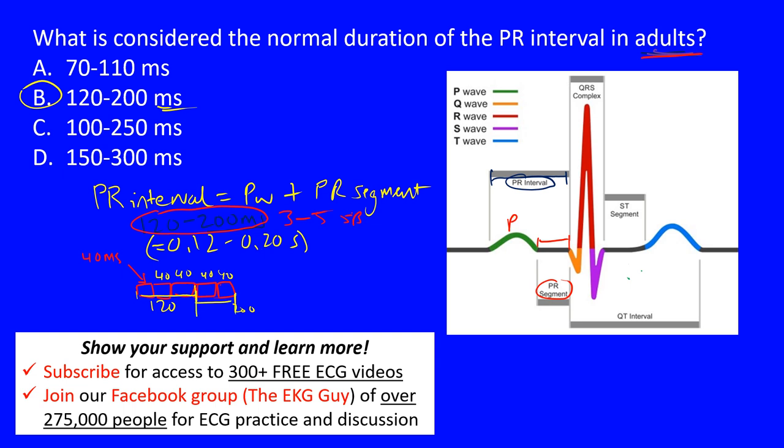If the PR interval is less than 120 milliseconds, you may start thinking about accessory AV pathways. Think about Wolff-Parkinson-White (WPW) syndrome or Lown-Ganong-Levine (LGL) syndrome — these conditions feature short PR intervals due to these accessory pathways. So it's really important to recognize the normal PR interval range in adults.